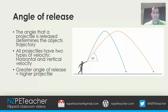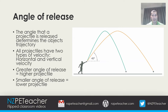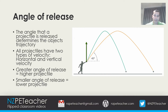A greater angle of release equals a higher projectile, while a smaller angle of release equals a lower projectile. The optimal trajectory is a result of an even combination of forward and upward flight. In theory this equates to an angle of release of 45 degrees. In practice, however, the optimal angle of release can vary and is usually between 35 and 45 degrees.